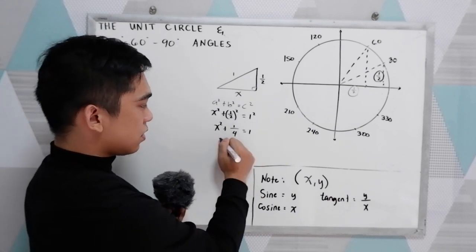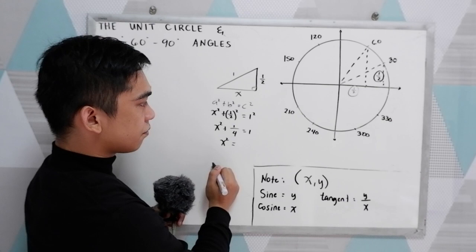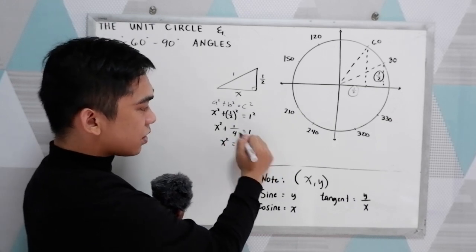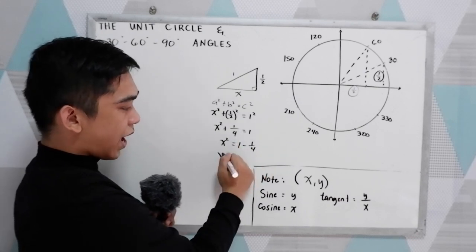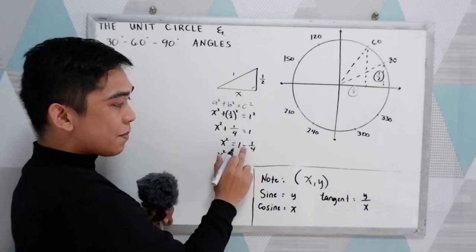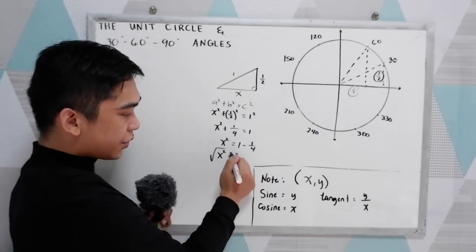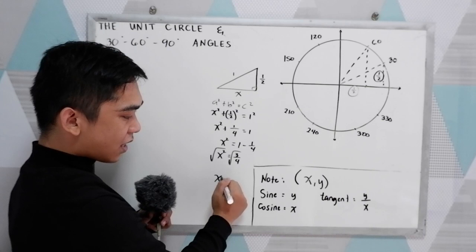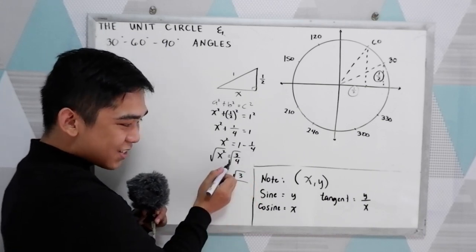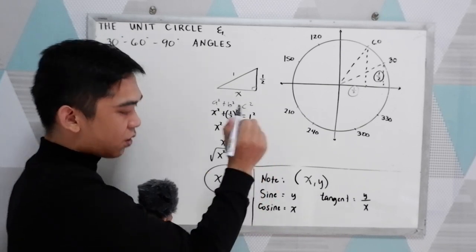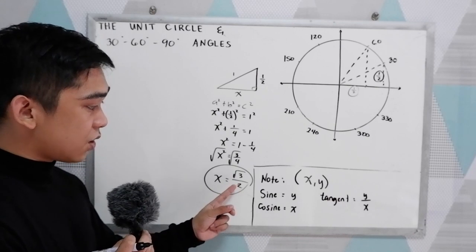Next, we have x squared is equal to one minus one fourth. So x squared is equal to one minus one fourth, that is three over four. Now, take the square root. So we have x is equal to the square root of three over the square root of four, that is two. So we now have the value of x: square root of three over two.